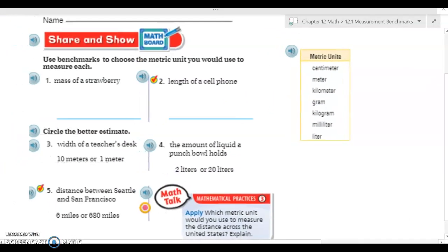Okay, it's time for share and show. We have our directions, which is very important to read. Use a benchmark to choose the metric unit you would use to measure each. So I'm going to make sure I underline and box metric units, so I have to think about metric. And it's actually giving me a little hint over here on the side to help me. So the mass of a strawberry. If I remember, my mass ones end in grams, so I'm going to be looking at grams or kilograms. Well strawberries aren't very big, so it's probably going to be the smaller one. So I'm going to measure in grams.